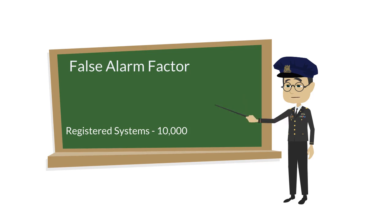Once we have a count of alarm systems, we begin to track alarm dispatches and how many of those dispatches were due to false alarms. To calculate our False Alarm Factor, we simply divide our false alarm dispatches by the number of registered alarm systems.